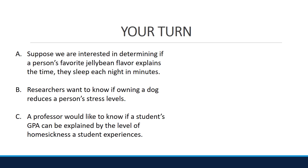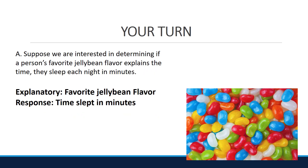Read the following examples and identify the explanatory and response variable. Pause the video and when you come back we'll look at the answers together. Suppose we are interested in determining if a person's favorite jellybean flavor explains the time they sleep each night in minutes. Here the explanatory variable is favorite jellybean flavor and the response is time slept in minutes.